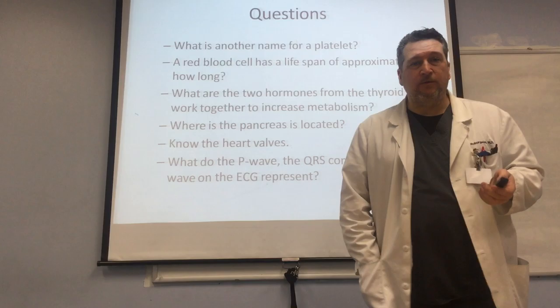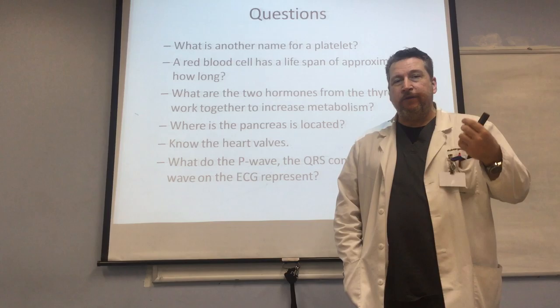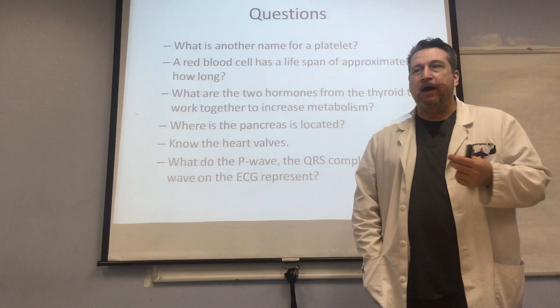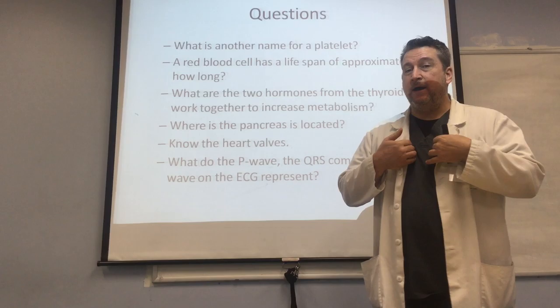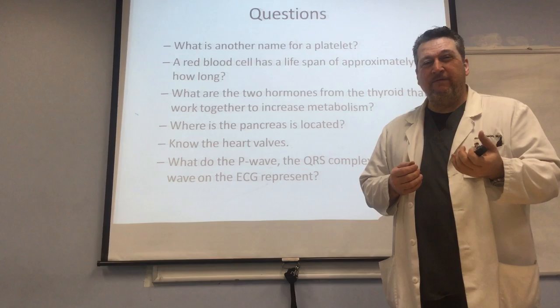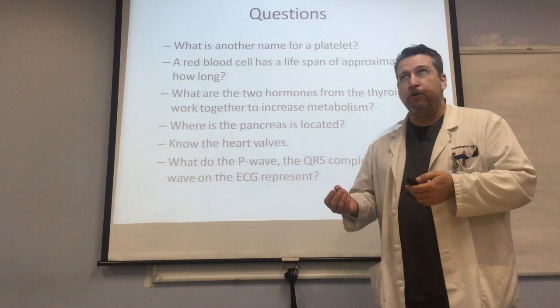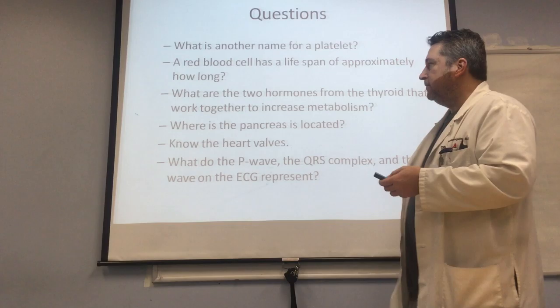Know the heart valves. From the right atrium to the right ventricle, blood goes through the tricuspid valve. On the left side, from the left atrium to the left ventricle, blood goes through the bicuspid valve, also known as the mitral valve — tri before you buy. The semilunar valves come from the ventricles: the right ventricle going into the pulmonary trunk passes through the pulmonary valve, and blood from the left ventricle into the aorta passes through the aortic valve.